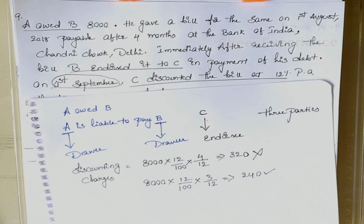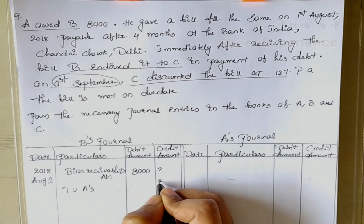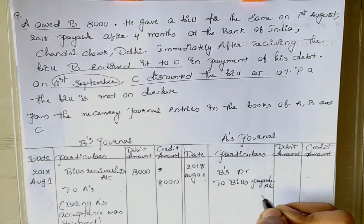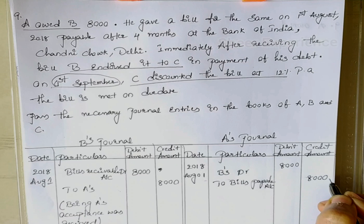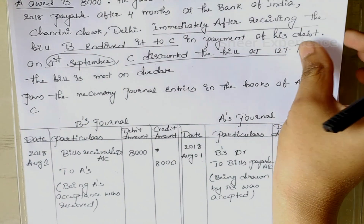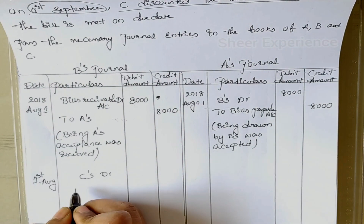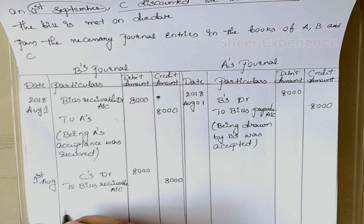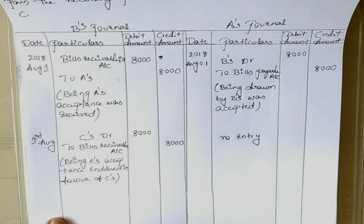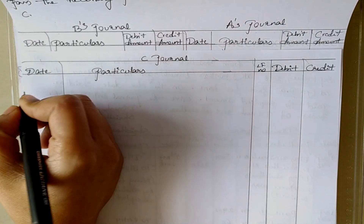Journal in B's books: Bills Receivable Account debit to A. Amount is 8000. Journal in A's books: B debit to Bills Payable Account. Amount is 8000. B endorsed the bill to C immediately after receiving it, so journal in B's books: C debit to Bills Receivable Account. Amount is 8000. In A's books there won't be any entry for the endorsement, as A will pay the bill amount on the due date.